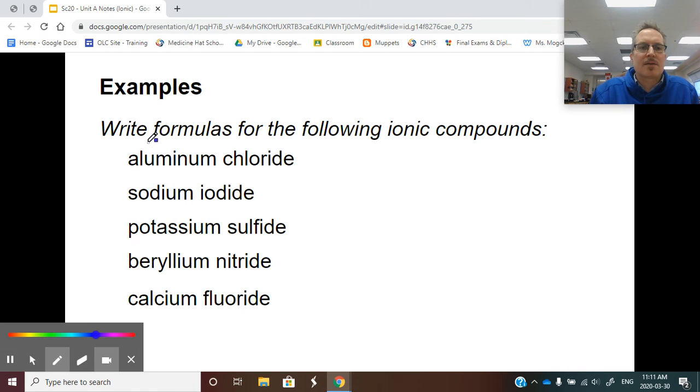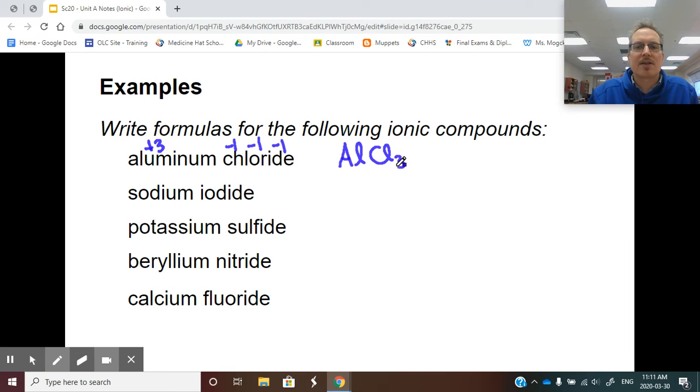For aluminum, positive three, chlorine is negative one. I'll need three of these to balance out. So this is going to be AlCl3. Sodium is positive one. Iodine is negative one. They're already balanced, so I just need one of each. NaI.